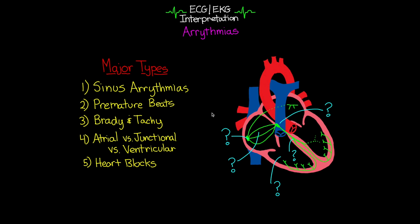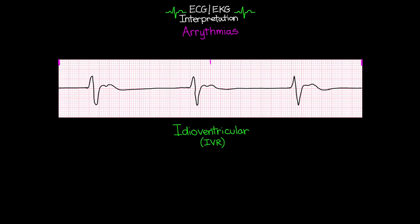The first of these that we're going to talk about is our idioventricular rhythm, or IVR. This idioventricular rhythm is going to be the result of when either the SA node or the AV node are either not firing or not sending their signals down when they are firing, or if they're sending them at such a slow rate that the ventricular intrinsic rate or the intrinsic rate of the bundle of His or the Purkinje fibers take over and begin to at least get some sort of contraction and cardiac output.